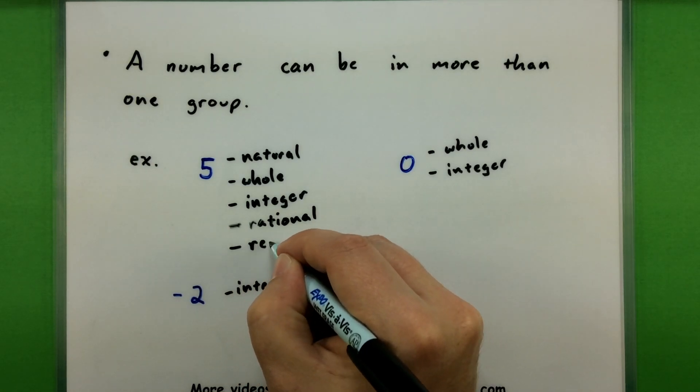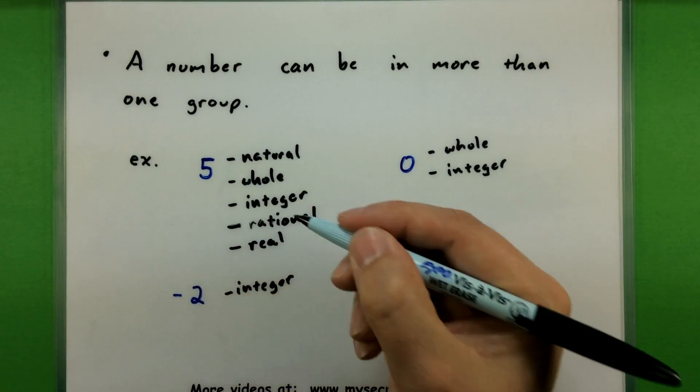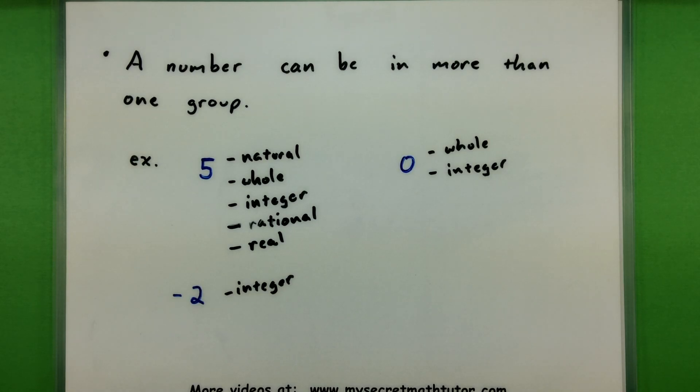So always be on the lookout as you're learning new types of numbers to think about the numbers you've already learned about and what groups that those would end up being in.